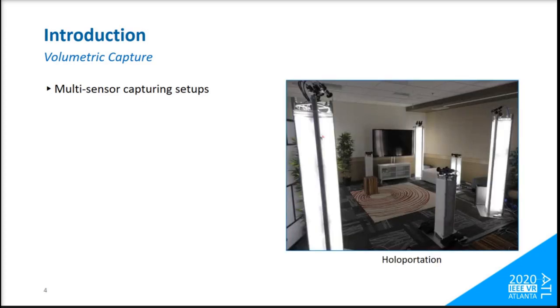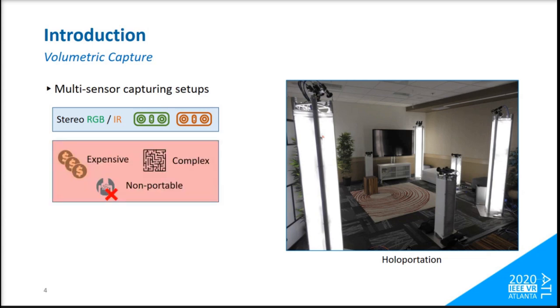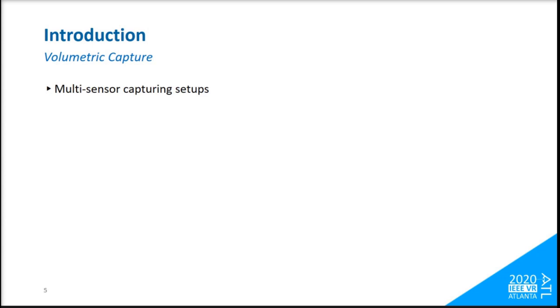Another example is the Holopertation system, which uses its own custom setup of two IR cameras to produce depth maps, along with accompanied RGB sensors. Despite the impressive and high-fidelity results of their 3D reconstruction, this system as well is expensive and complex to build and hard to move around.